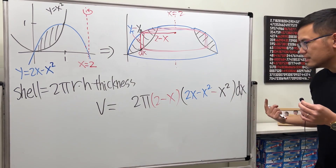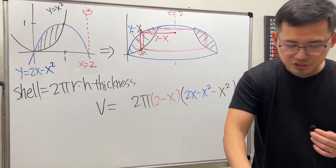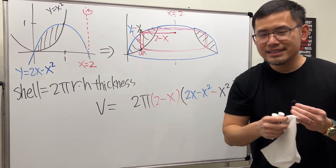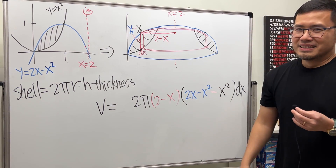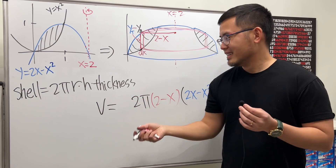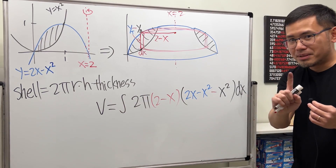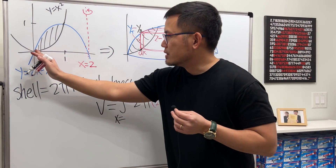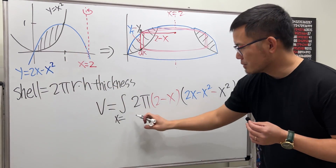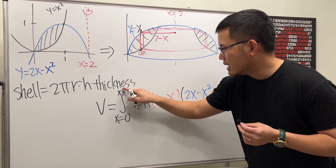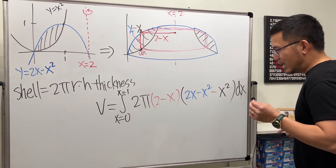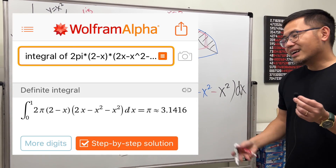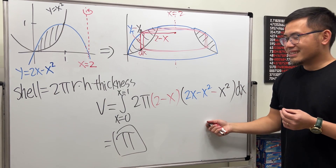Putting it all together, the volume equals ∫₀¹ 2π(2 - x)((2x - x²) - x²) dx. We integrate from x = 0 to x = 1 since we are in the x-world. Add up all such shells and of course you get π as well. Hopefully this helps — that's it!